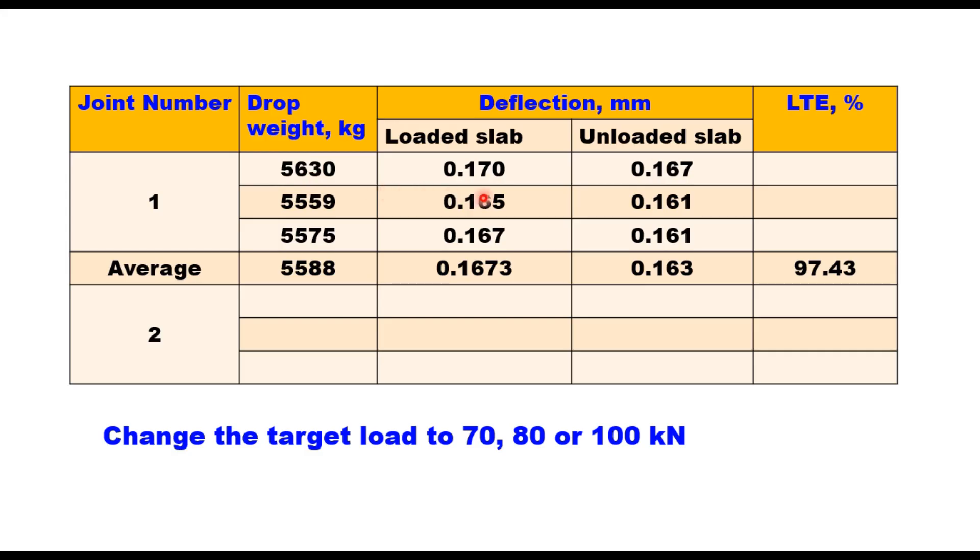And there is a deflection in loaded slab and deflection in unloaded slab. So you take three observations, take average of these three observations for the average load. And this is the average deflection in the loaded slab, average deflection in unloaded slab. And this ratio will give you 97.43% load transfer efficiency.